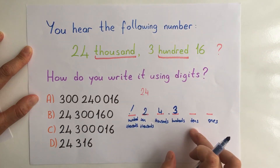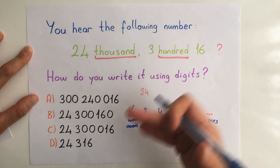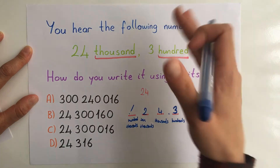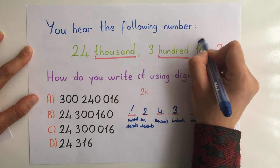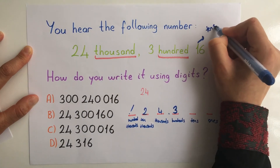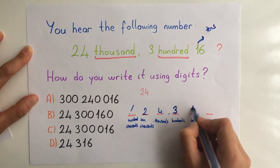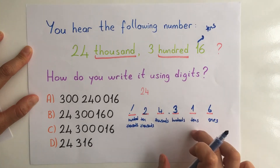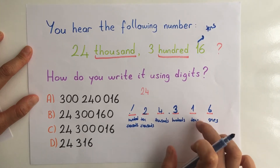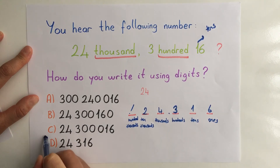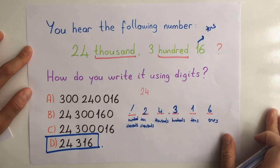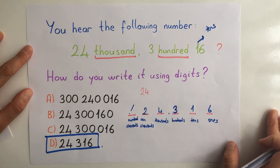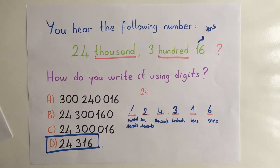Nothing on the tens place because it didn't say anything for tens. And here sixteen — so on the tens place there is one, and on the ones place there is six. Yes, so the answer is this.